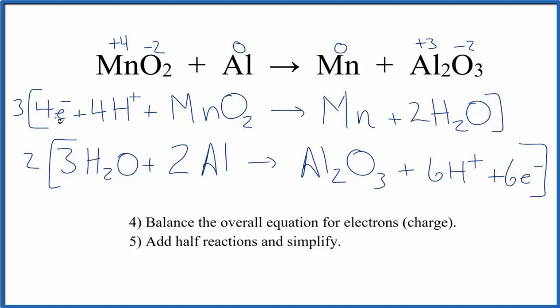three times four electrons is 12 electrons. Two times six is 12 electrons. So that would balance the charge. Now we've got to add these half-reactions together and then we can simplify. So three times everything, two times everything.